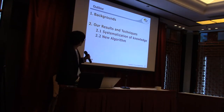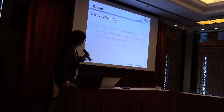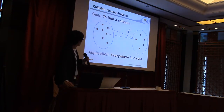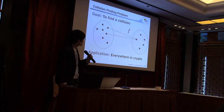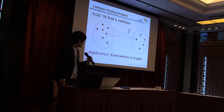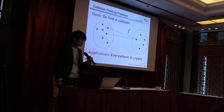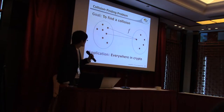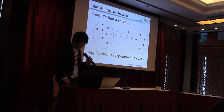This is the outline of my presentation. I begin with background. This is the polygon finding problem. Polygon finding problem is one of the most important problems in crypto, and applications can be seen everywhere in crypto. A polygon of function f is defined to be a pair of elements in the domain of function which are mapped to the same value by f.